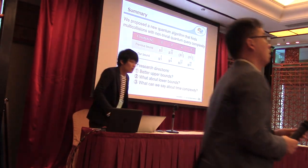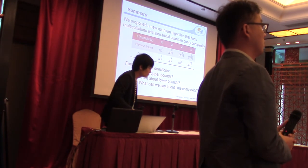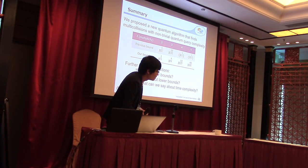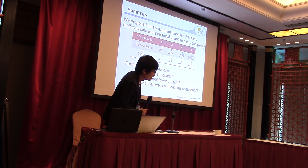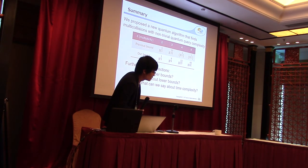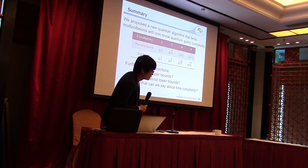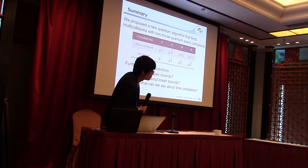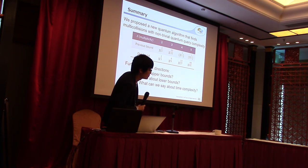Any questions? A comment from the audience: one can add space complexity as an open research question. In classical algorithms, there is a big difference between two-collision and three-collision: for two collisions using the rho method, you don't need any memory, but for three collisions you need a lot of memory. If you use an n to the power 1/2 quantum algorithm calculating inverses, you don't need any memory regardless of the multi-collision size.